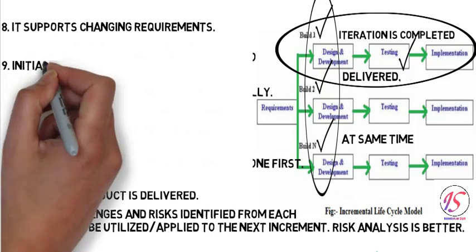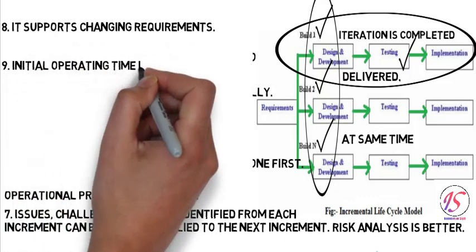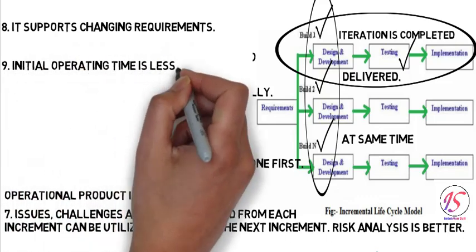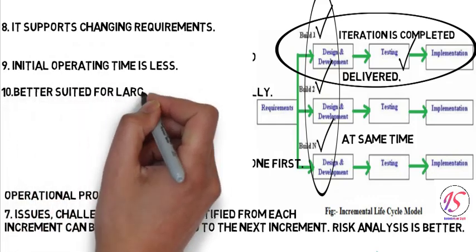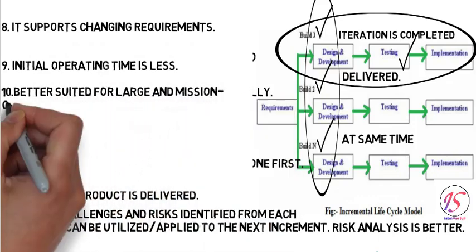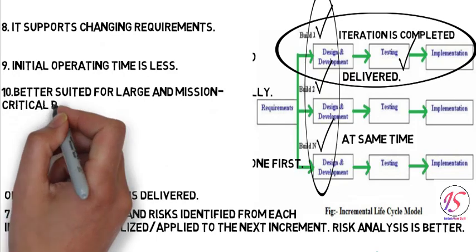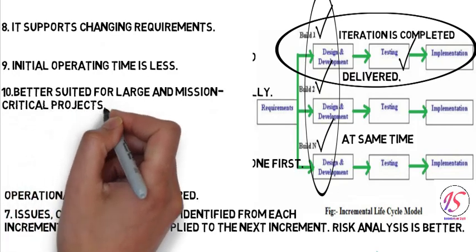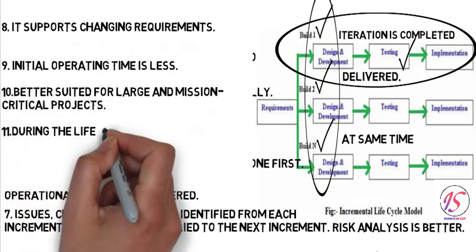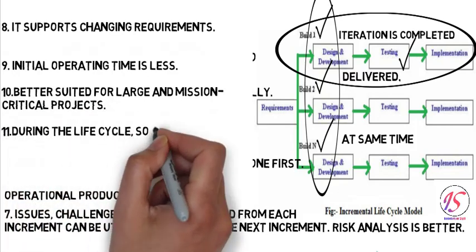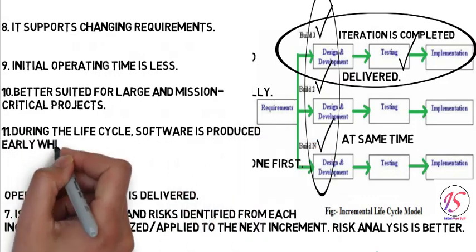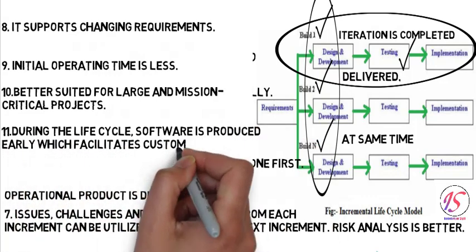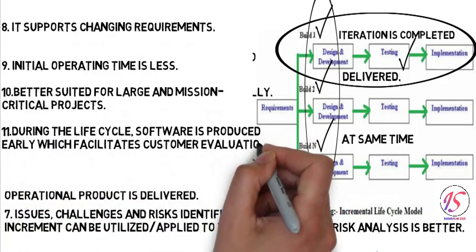It supports changing requirements — when requirements change, the specific build is rebuilt instead of rebuilding the whole software. Initial operating time is less, and it is better suited for large and mission-critical projects. During the life cycle, software is produced early, which facilitates customer evaluation and feedback.